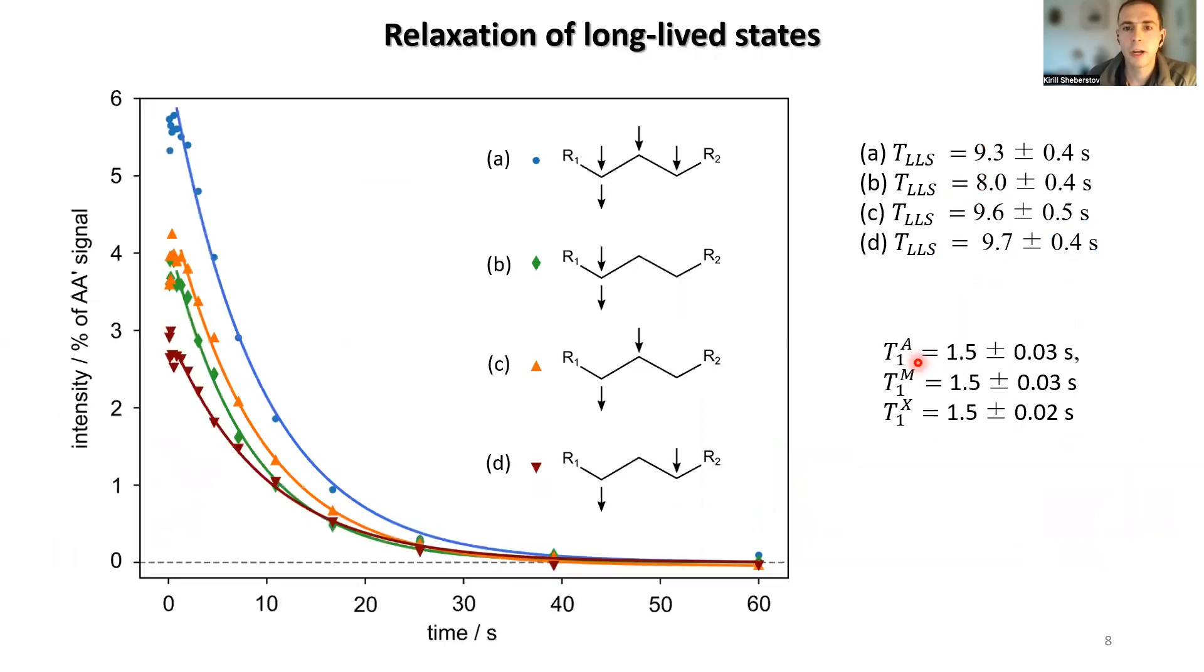It turns out that actually this kind of logic can be applied to molecules with more than two CH2 groups. For example, here we show that you irradiate with the first SLIC one end of the molecule and irradiate on the another end of the molecule.